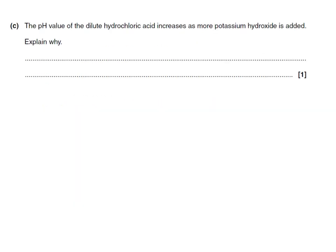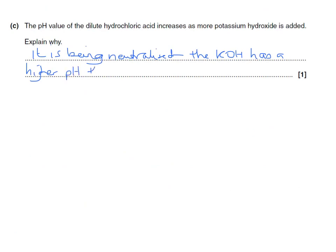The pH of the dilute hydrochloric acid increases as more potassium hydroxide is added because it is being neutralised. KOH has a higher pH than HCl, so adding it raises the pH.